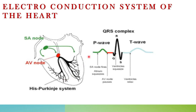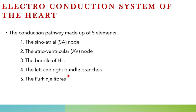The SA node is the sino-atrial node. From there, the signal travels to the atrio-ventricular node. Then the bundle of His begins, which branches into the left and right bundle branches. At the ends of these branches are the Purkinje fibers. So the conduction pathway is: SA node → AV node → bundle of His → left and right bundle branches → Purkinje fibers.